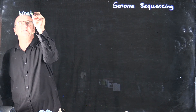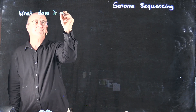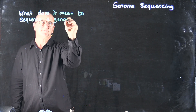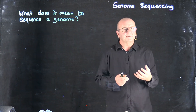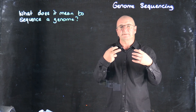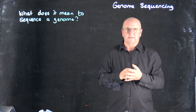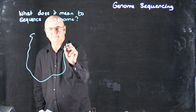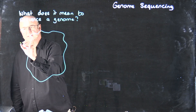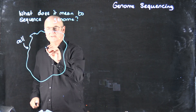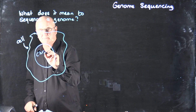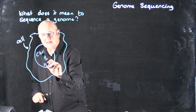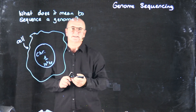So that leads us to the next question: what does it mean to sequence a genome? A genome consists of maybe multiple chromosomes and some plasmids, but let's keep it simple. Let's assume we've got a simple bacteria — here's our cell, and our bacteria has one chromosome. We'll call it chromosome one, and that chromosome is a million base pairs, ten to the six base pairs long.